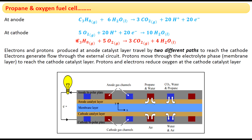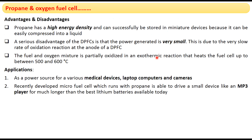The overall reaction for the propane-oxygen fuel cell is: C₃H₈ + 5O₂ → 3CO₂ + 4H₂O. Oxygen is reduced by propane, forming carbon dioxide and water molecules, generating electrical power. An advantage of propane is its high energy density compared to other fuels, and it can be successfully used in miniature devices like micro fuel cells.